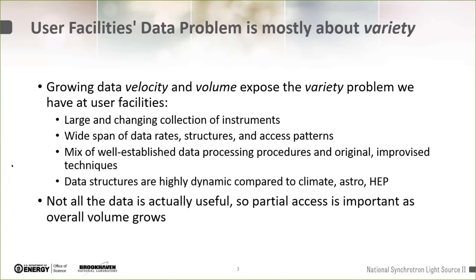To zoom way out: the problem we have at user facilities like NSLS-2 — which is effectively 28 small research groups stuck together — is that they have extremely different data scales. We have groups producing a gigabyte in a whole year and groups producing terabytes in a day. There's a lot of volume and velocity, but I think the interesting problem is how this increased data scale is driving our variety problem. People used to capture variety in ad hoc data formats and notes held in their heads, and as they can no longer do that, we're getting a host of new challenges.